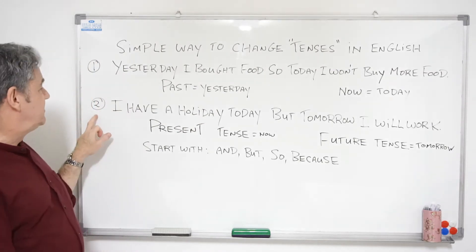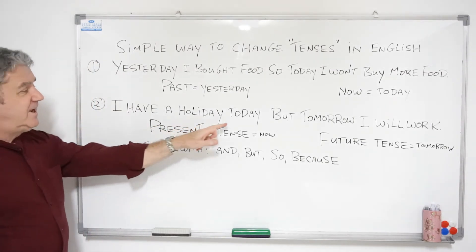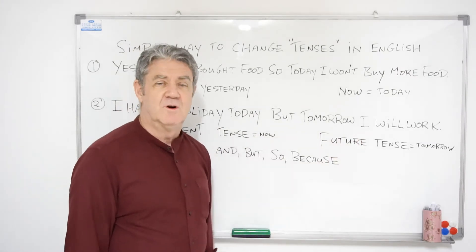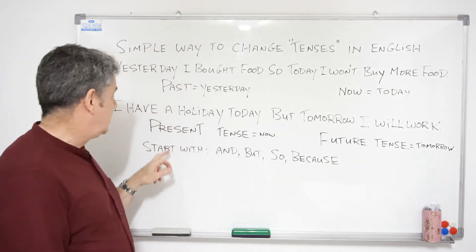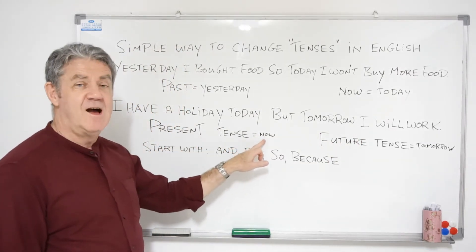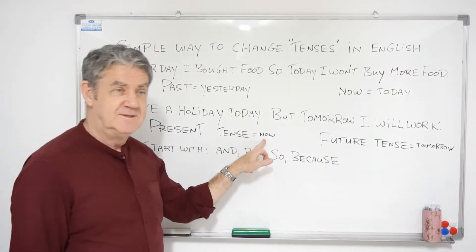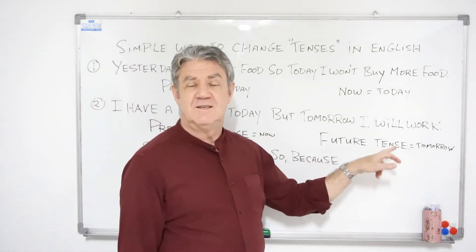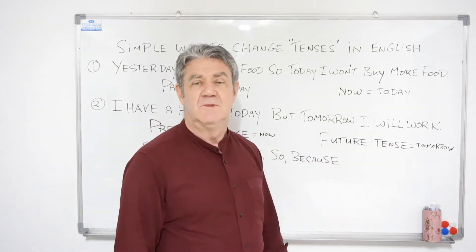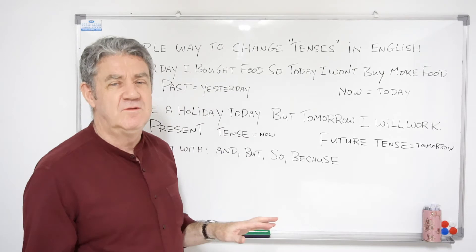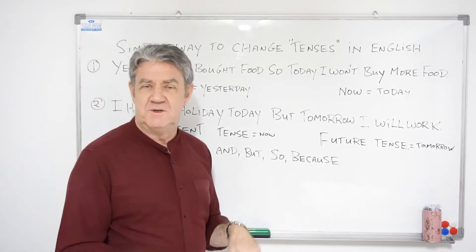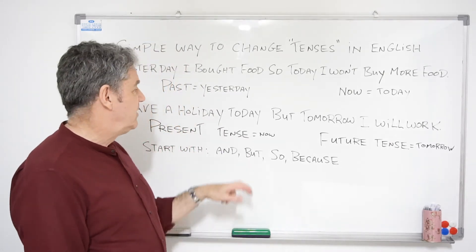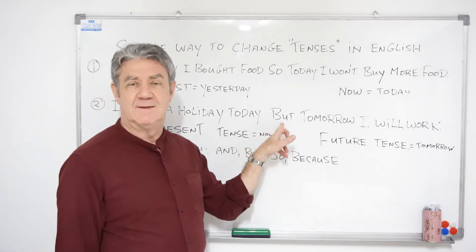Let's have a look at another example. Number two: 'I have a holiday today but tomorrow I will go to work.' So present tense is now, or today in this case, and future tense is tomorrow. How do we change smoothly from today's time to tomorrow's time? We can use the word 'but'.